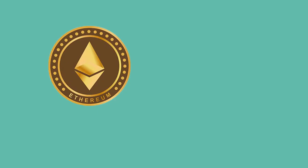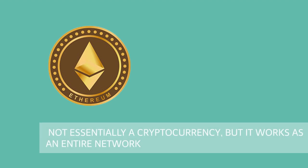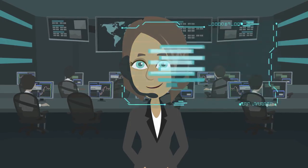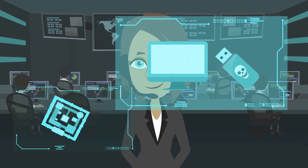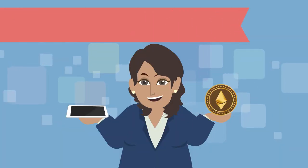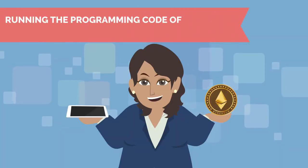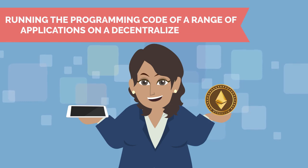In general, Ethereum itself is not essentially a cryptocurrency, but it works as an entire network. The currency on this network is, in fact, Ether. In addition to tracking ownership of digital currency, Ethereum also focuses on running the programming code of a range of applications on a decentralized network.